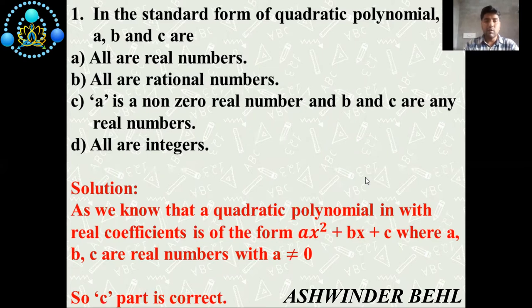Solution: As we know that a quadratic polynomial with real coefficients is of the form ax² + bx + c where a, b, c are real numbers with a not equal to zero. So c part is correct option.